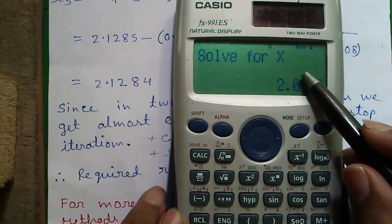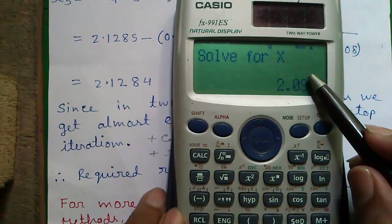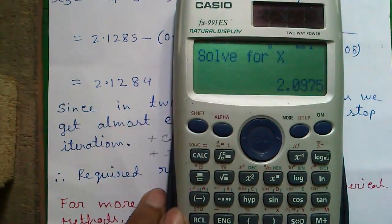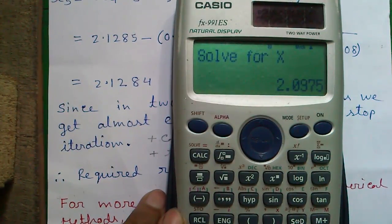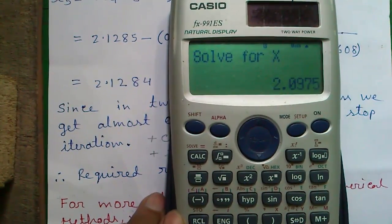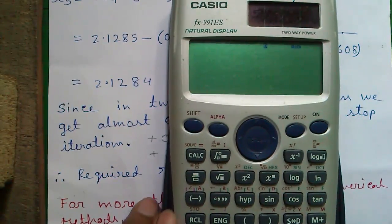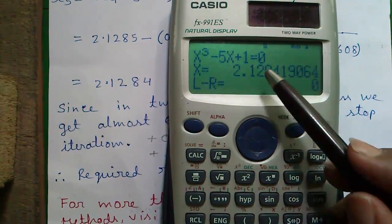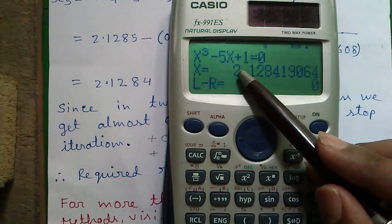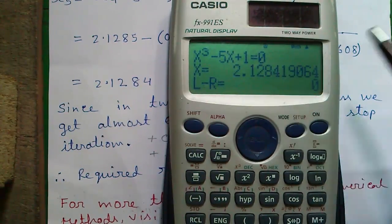And enter your closest guess for the x value. So we can enter either the lower range of the root or the upper range of the root. So our lower range was 2. So enter 2 and press equals to. It will do the calculation for you. So x = 2.1284.